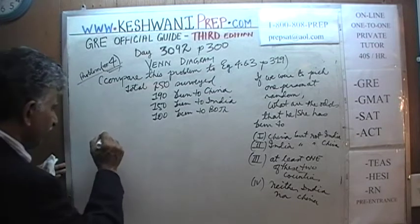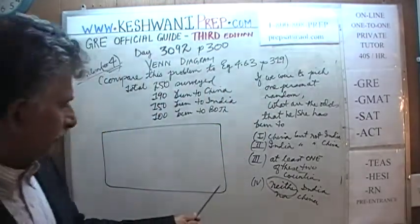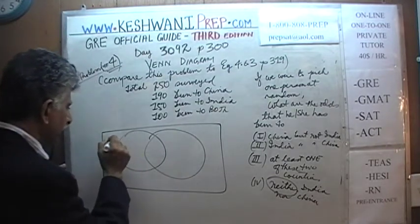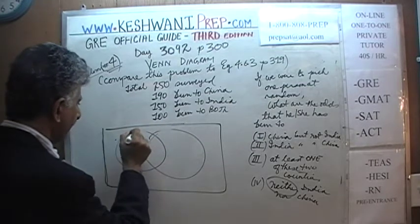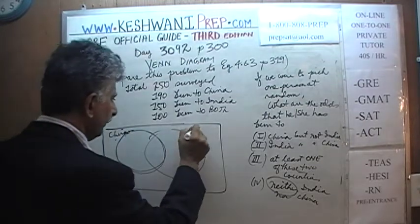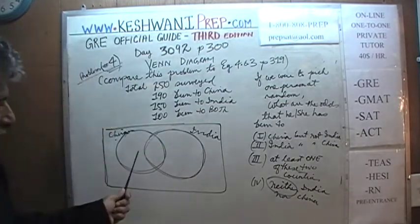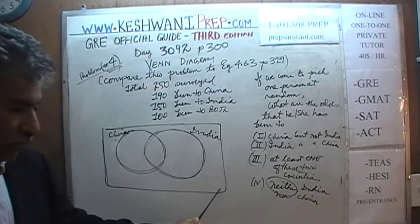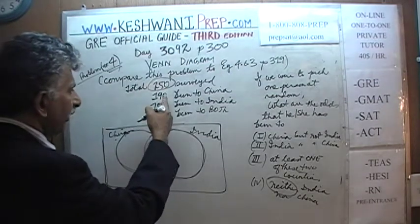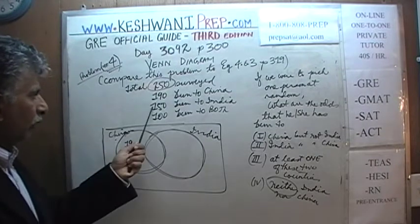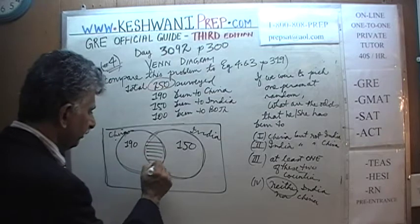First, we put our universal set. We don't yet know how many have been to neither, so we can't fill that in yet. We label set China and set India. We know 250 total, 190 to China, 150 to India, and 100 to both countries. We place China and India as our two overlapping sets.